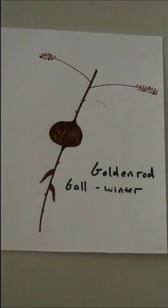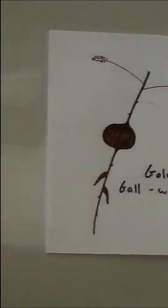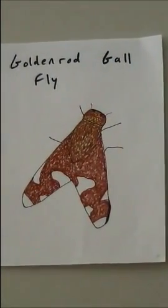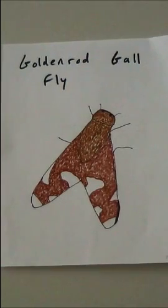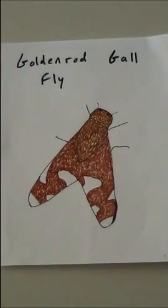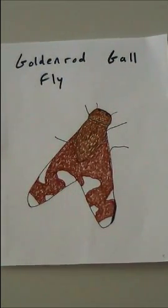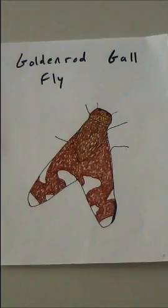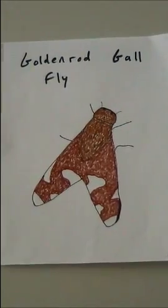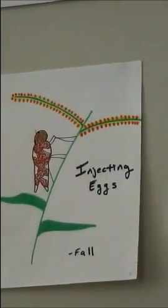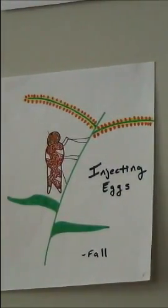The goldenrod mystery begins with a small goldenrod gall fly who spends all of its two-week lifespan on and around a single goldenrod plant. After two goldenrod flies mate, the female injects her fertilized eggs into the stem of the goldenrod plant.